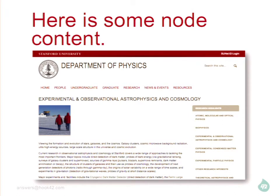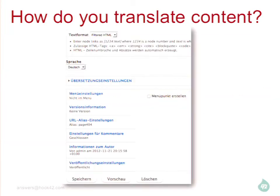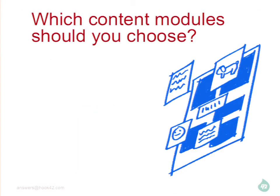Here's a very typical Drupal node page — a title, an image, and a body. Once you have the right modules installed, translation is pretty simple. You'll have a tab on your page, it shows all the languages you have enabled, and you can add or edit a translation. When you're editing the translation, you can see the language selector — in this case German — and it'll select it for you because you've said 'I want to add a translation for this language.'